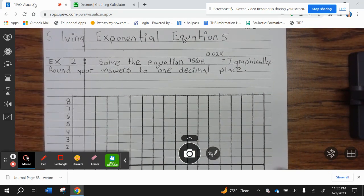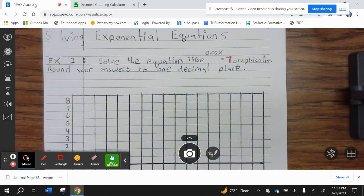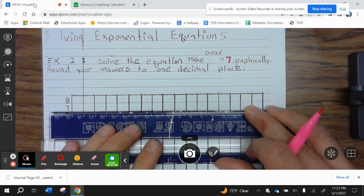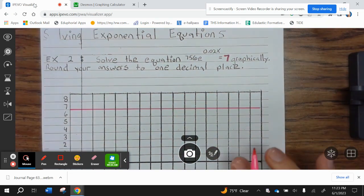So you solve the equation. First off, I think let's actually graph the 7. That's the easiest part first. So graph y equals 7.